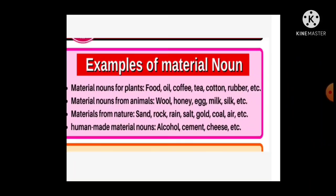Next, we see material noun. Material nouns from plants: food, oil, coffee, tea, cotton, rubber, etc. Material nouns from animals: wool, honey, egg, milk, silk, etc.